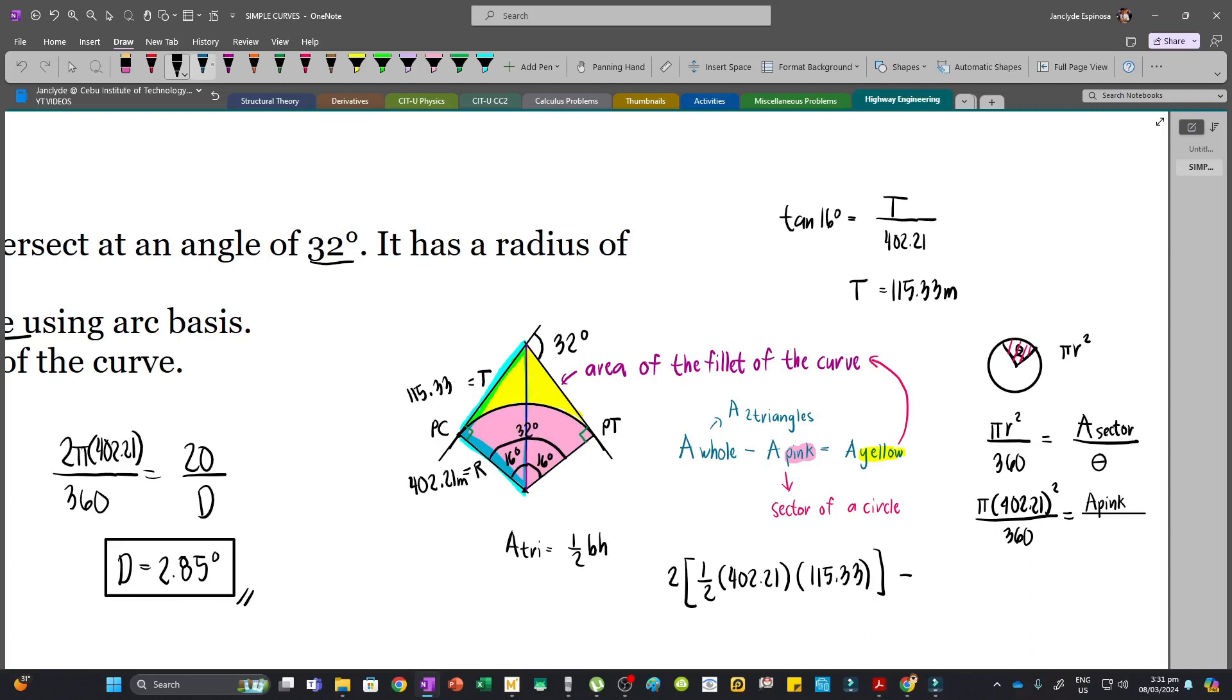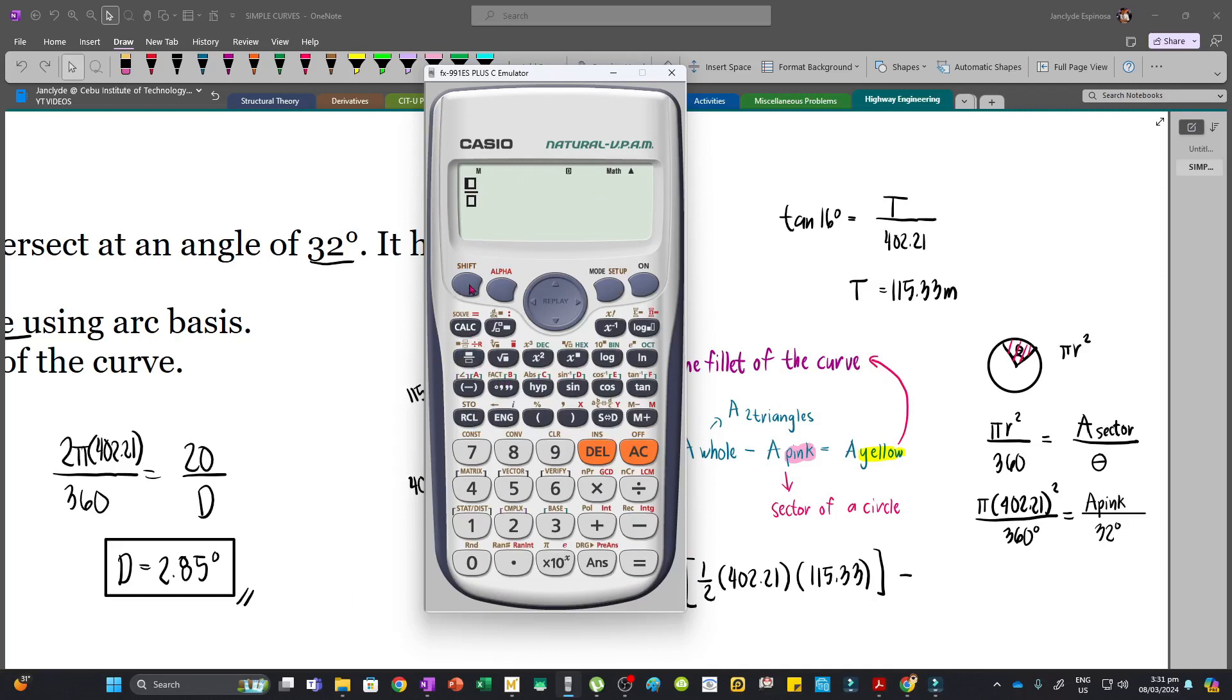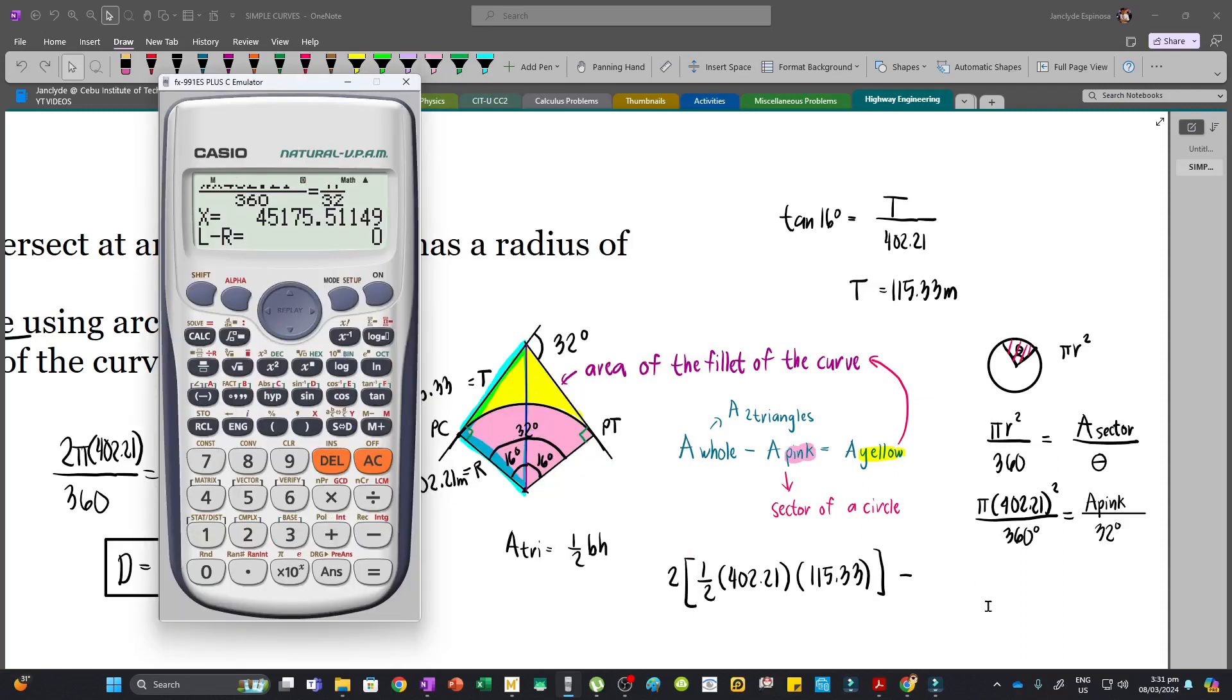And so now we can solve this area. So we have π times 402.21 squared divided by 360, that's equal to the pink area divided by 32. So we have 45175.51, and then that will be the yellow area which is what we are looking for.